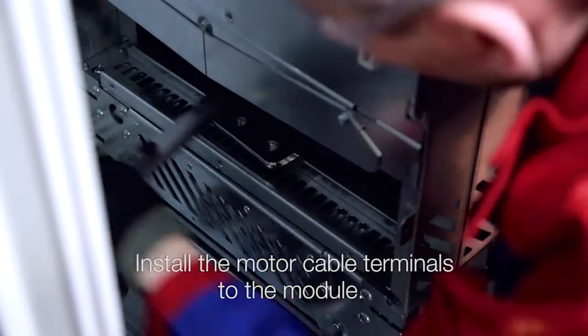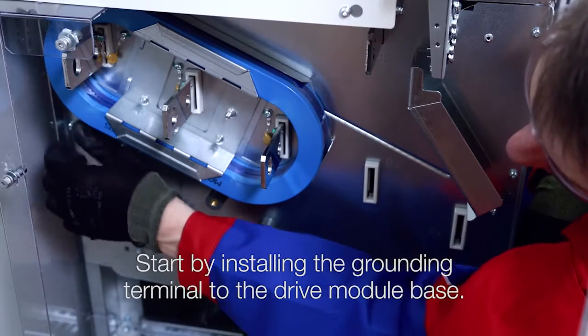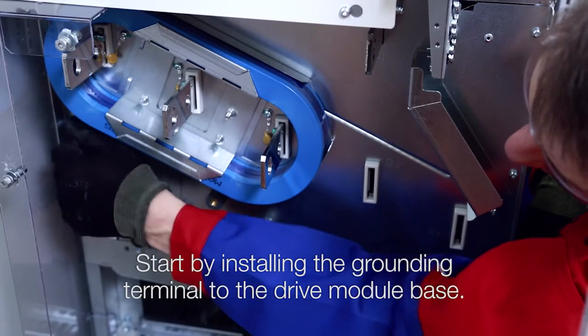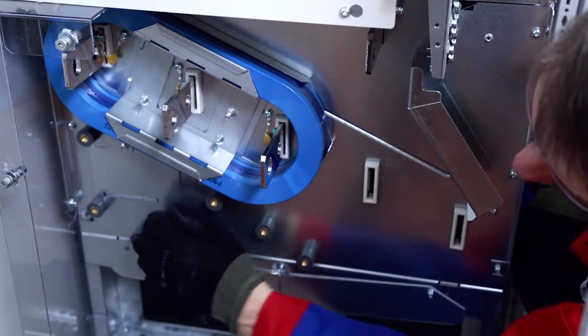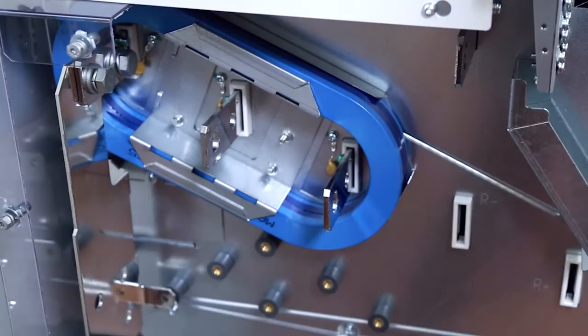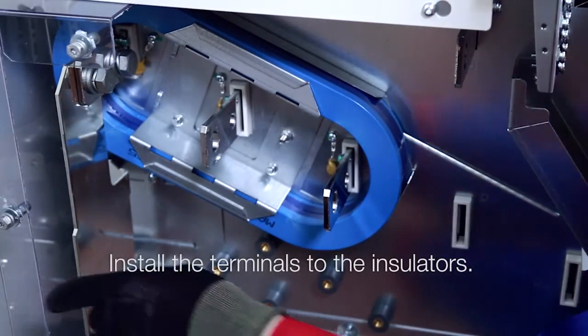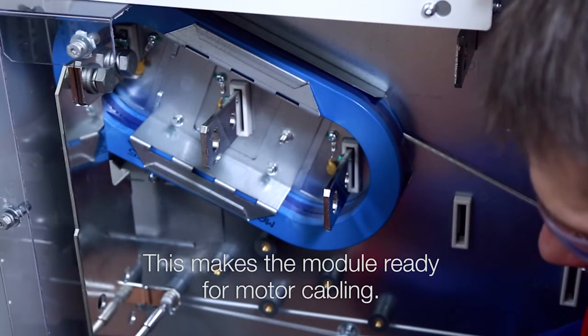Install the motor cable terminals to the module. Start by installing the grounding terminal to the drive module base. Install the terminals to the insulators. This makes the module ready for motor cabling.